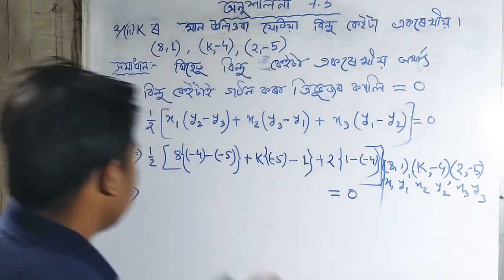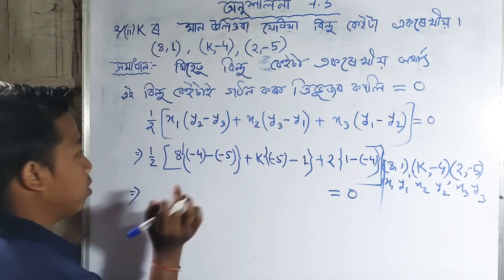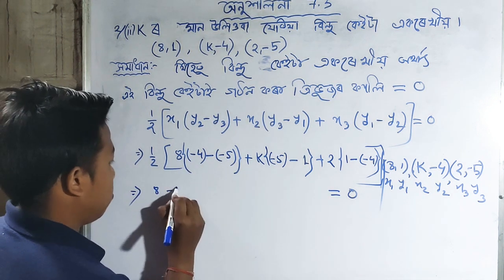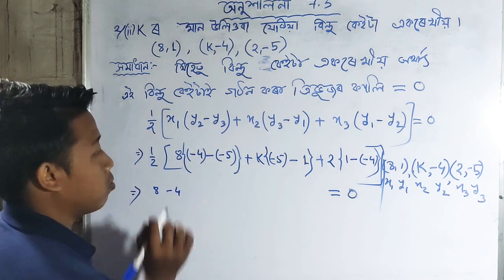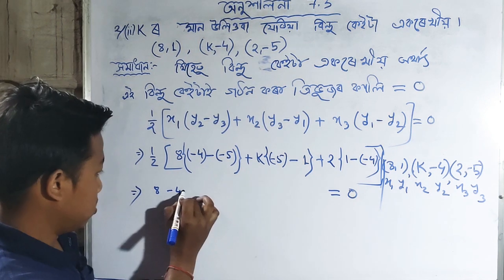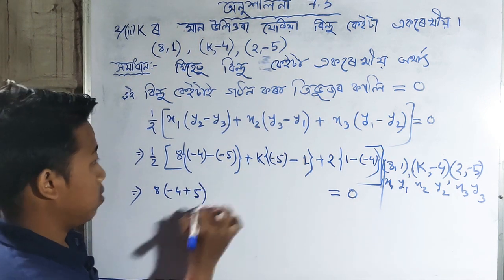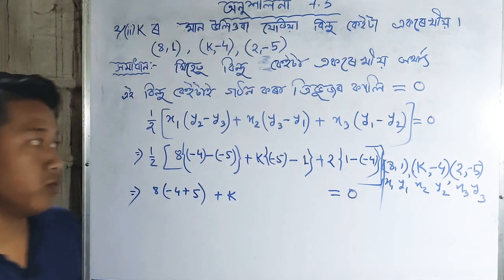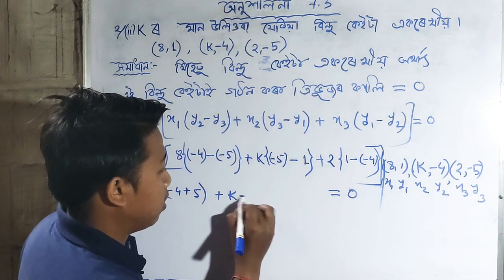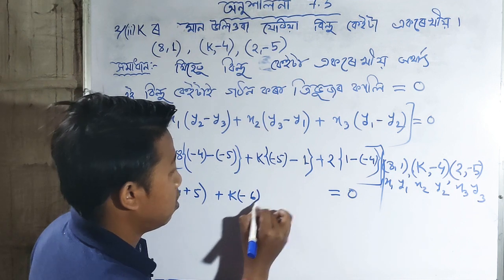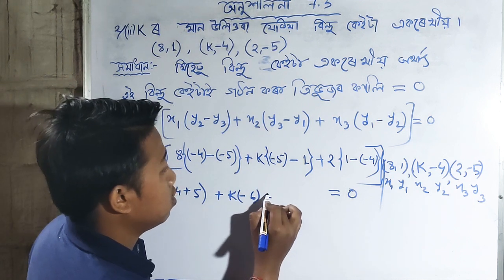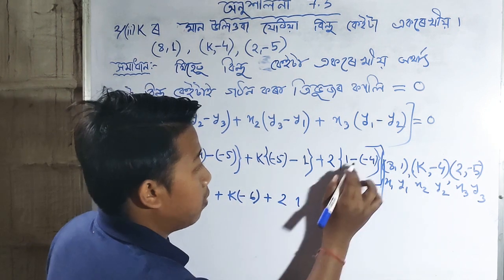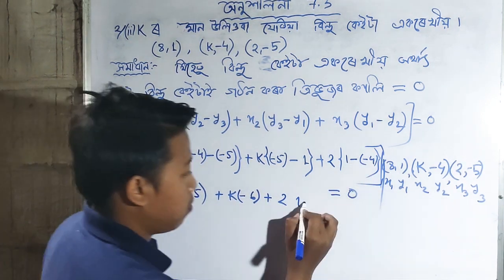Let's calculate: 8 minus 4 gives us... -4 minus -5 equals 1, so 3 times 1. Then we have plus 5 plus K times -5 minus 1 equals minus 6. We get minus 6K.